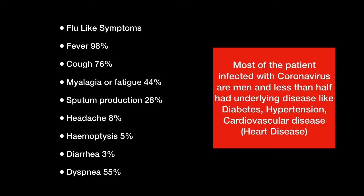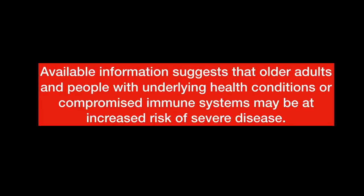Most of the patients infected with coronavirus are men, and less than half had underlying diseases like diabetes, hypertension, or cardiovascular disease. Available information suggests that older adults and people with underlying health conditions or compromised immune systems may be at increased risk of severe disease.